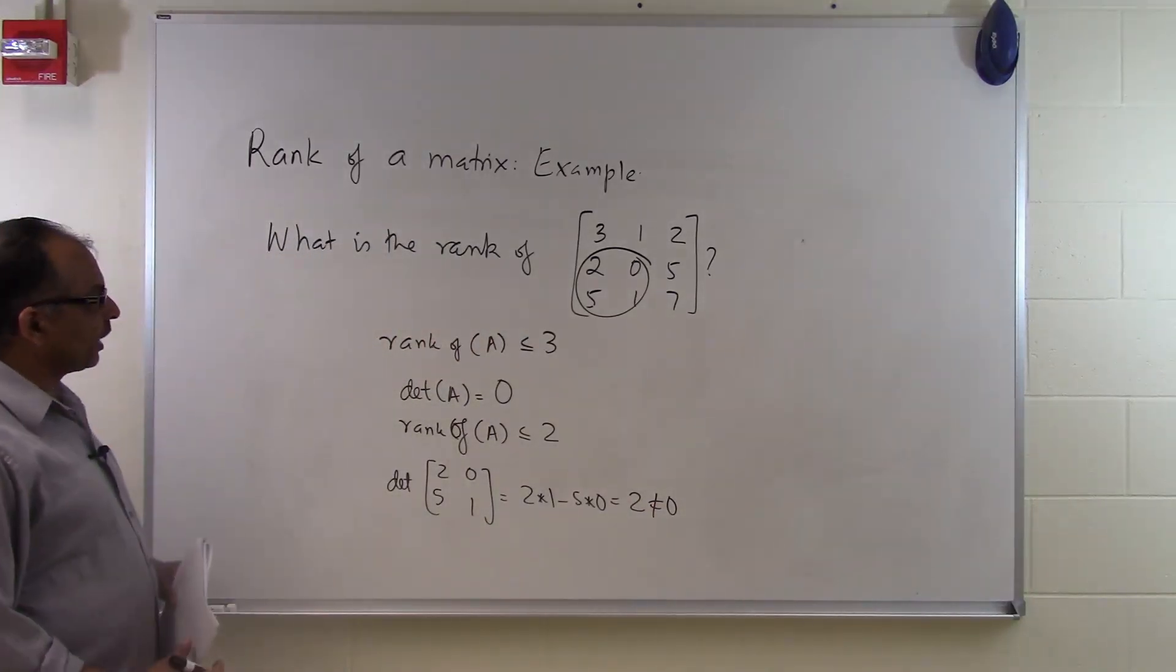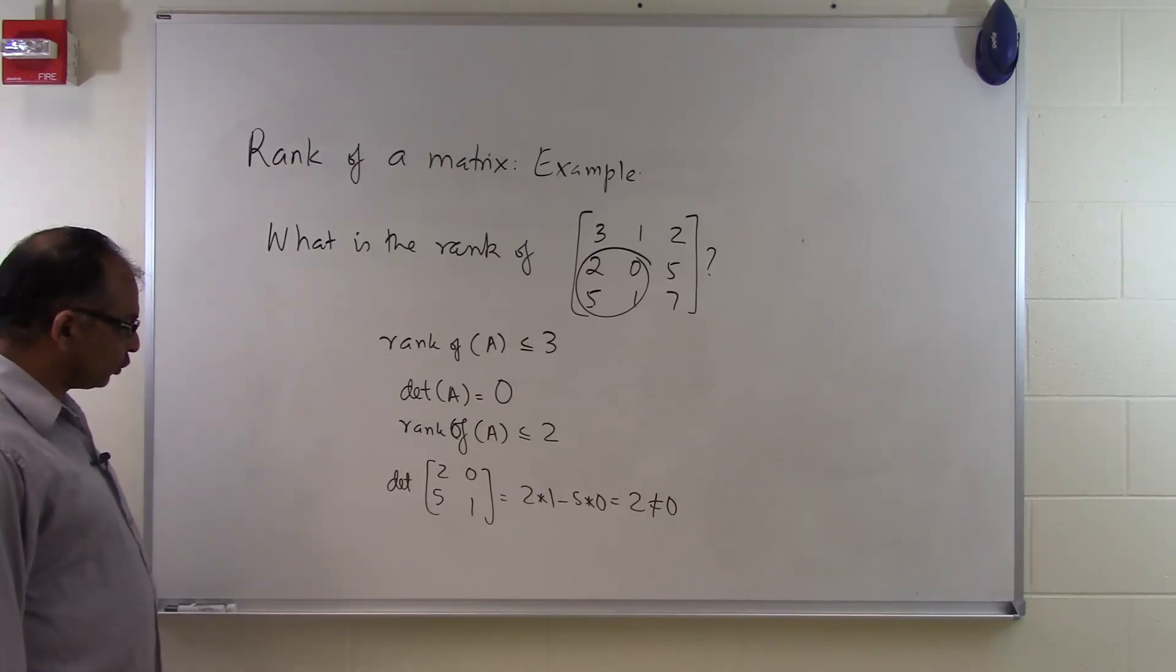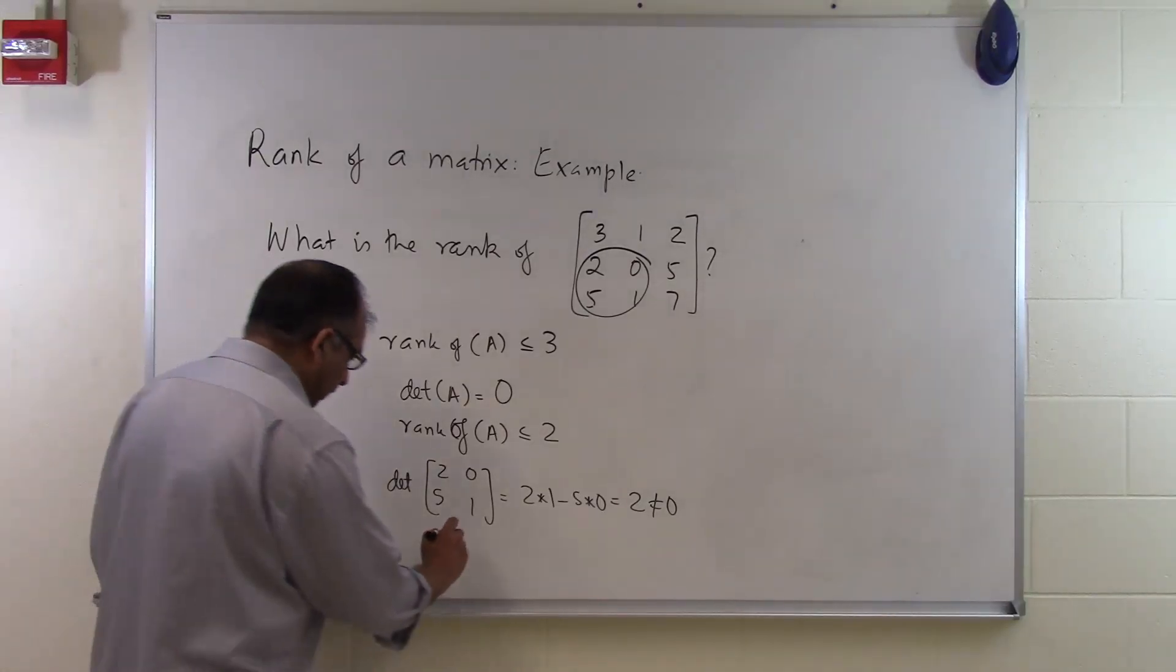So here I am finding out the first submatrix which I picked up which was of a 2x2 order, the determinant of that turns out to be non-zero. So what does that mean? That means that the rank of A is 2.